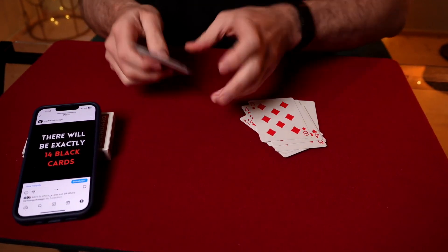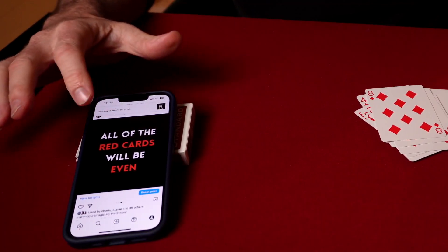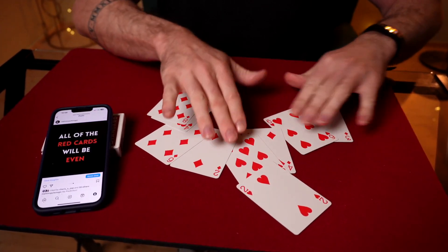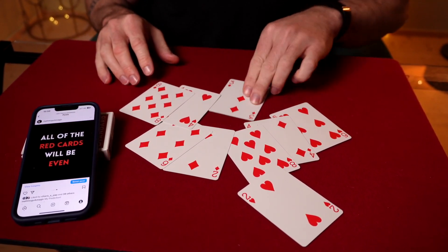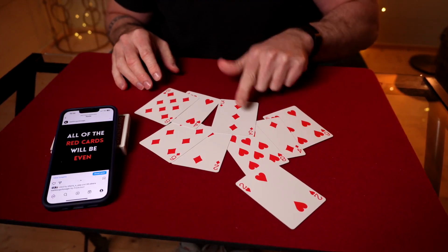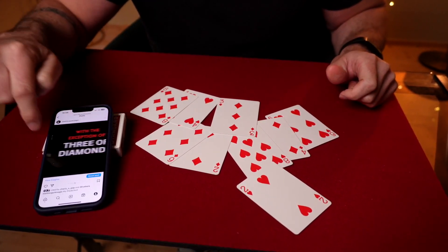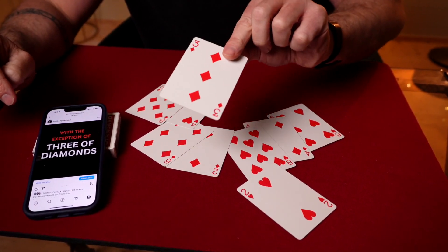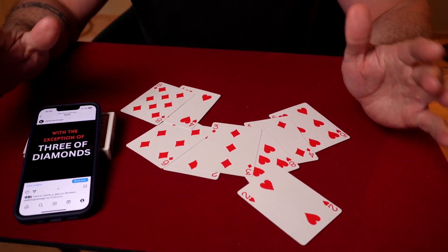But we'll go a stage further. Because there's more. It says all of the red cards will be even. So check this out. We spread these out now. So you can see every single card. Every single one of these is even. Oh wait, there is an odd card, the three of diamonds. Someone will point that out. But there's more to the prediction because the last scroll says, with the exception of the three of diamonds, and you have predicted an outcome that nobody could have predicted. This is crazy.